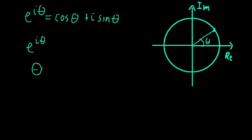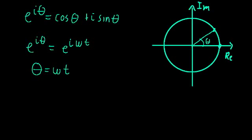Now imagine theta is a function of time — let's say theta equals omega t. So instead of e to the i theta, we have e to the i omega t. Starting at t equals 0, theta is 0 and we begin at that point. As time increases, theta increases and we progress around the unit circle. So we can think of this complex exponential as a function that rotates or moves in circular motion in the complex plane.